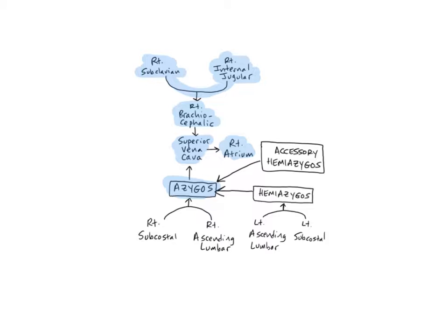It curves over the roots of the right lung at the level of the fourth thoracic vertebra to empty into the superior vena cava. The azygous receives blood from many tributaries, including the right subcostal vein, which runs just below the twelfth rib, the right ascending lumbar vein, which runs up the lumbar vertebrae, the accessory hemi-azygous vein, and the hemi-azygous vein. It drains blood from the right side of the thoracic wall, thoracic viscera, and posterior abdominal wall.